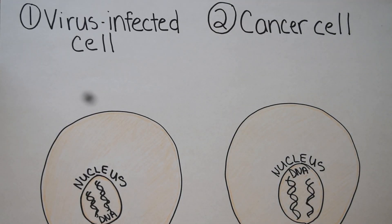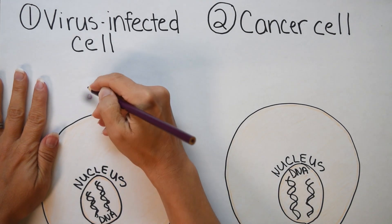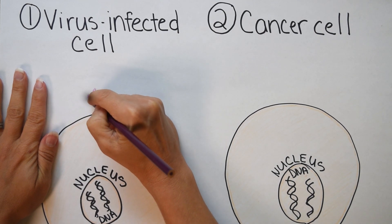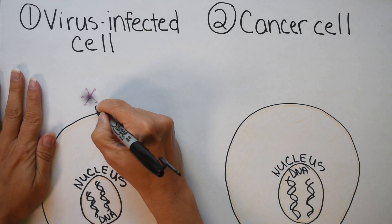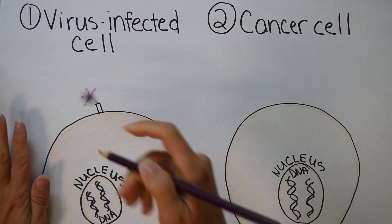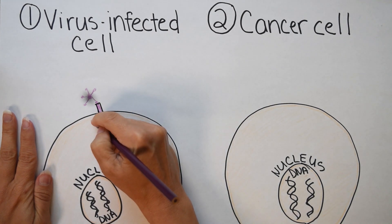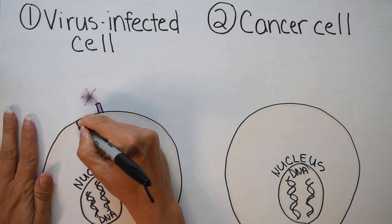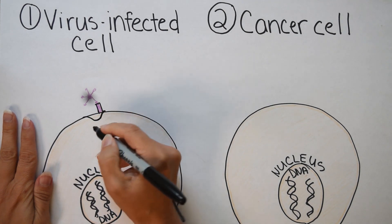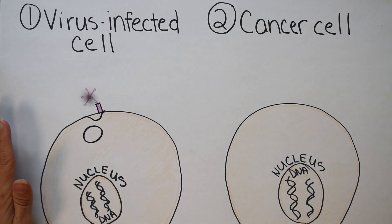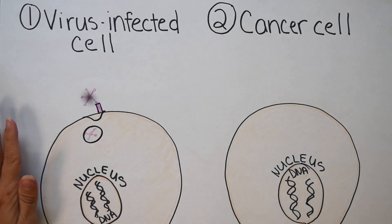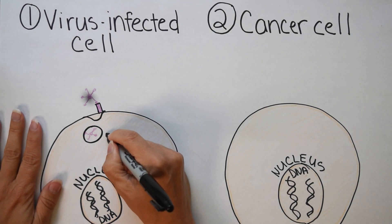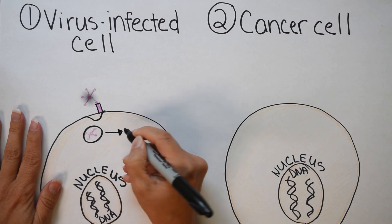Why would your own immune cells — the antibody producers — attack your neurons? There are two main answers. Number one is a very specific type of virus. Researchers think Epstein-Barr virus could potentially cause autoimmune encephalitis, or maybe certain bacteria like Staphylococcus, or even cancer cells. So here I'm drawing a purple virus binding to the outside of a cell. This cell could be a regular tissue cell, and once it binds to the receptor, it gains access to the inside of the cell.